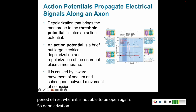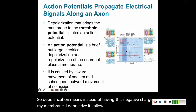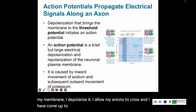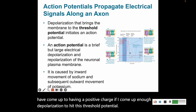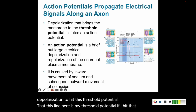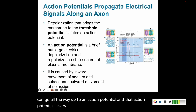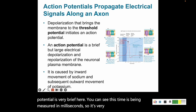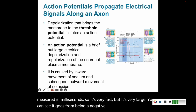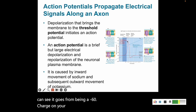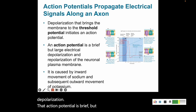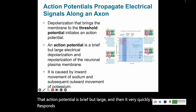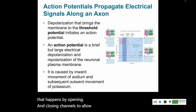Depolarization means instead of having a negative charge on the membrane, you allow ions to cross and build up a positive charge. If depolarization is sufficient to hit the threshold potential, the cell can go all the way up to an action potential. That action potential is very brief — measured in milliseconds — but very large, going from about negative 60 up to positive 40 millivolts. The membrane then quickly repolarizes by opening and closing channels to allow sodium and potassium to move.